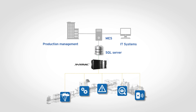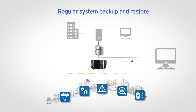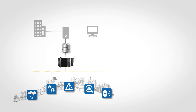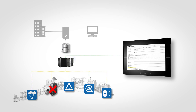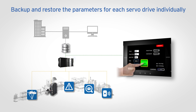The Sysmac automation platform allows backup and restore for programs, data, network configuration, and EtherCAT slave parameters. If equipment fails, it must be replaced with minimal downtime to production. This involves changing the failed item and restoring the setup of the device.